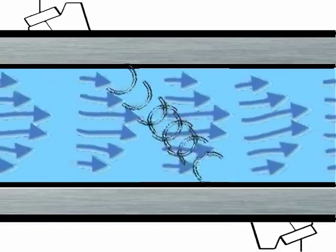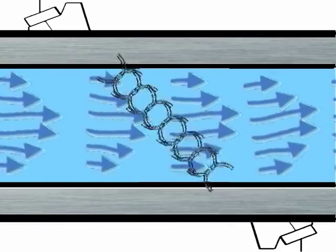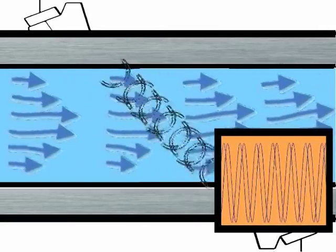When we have a signal sent simultaneously from both sides of the pipe, the signal traveling with the flow will arrive faster than the signal traveling against the flow.